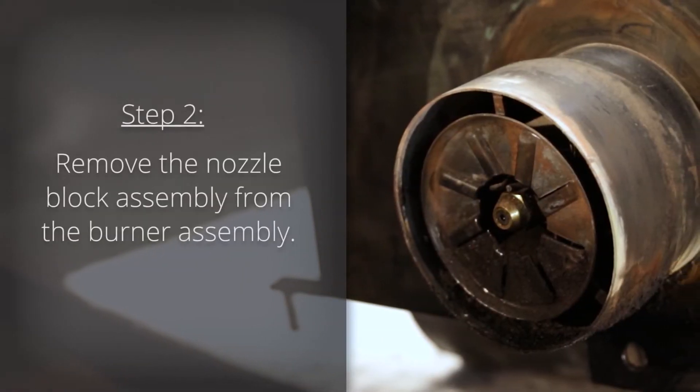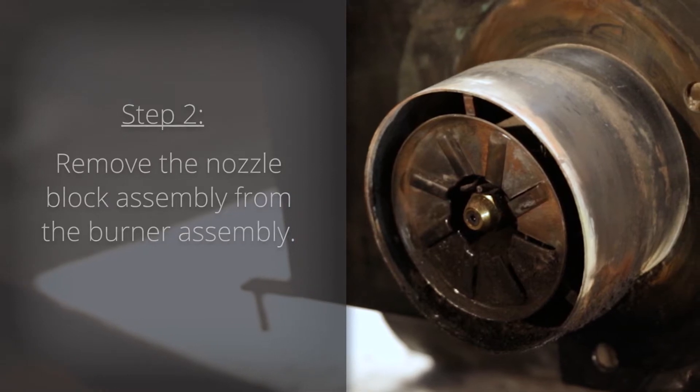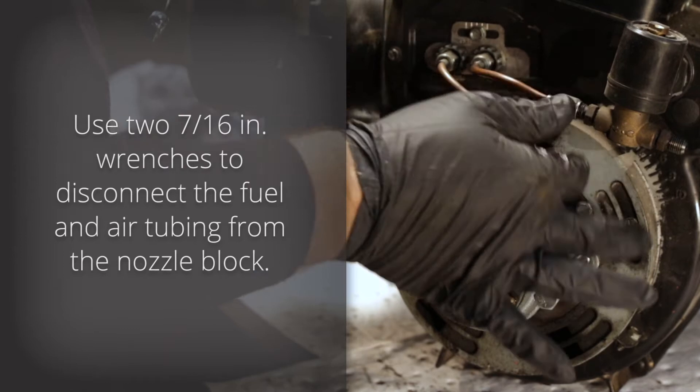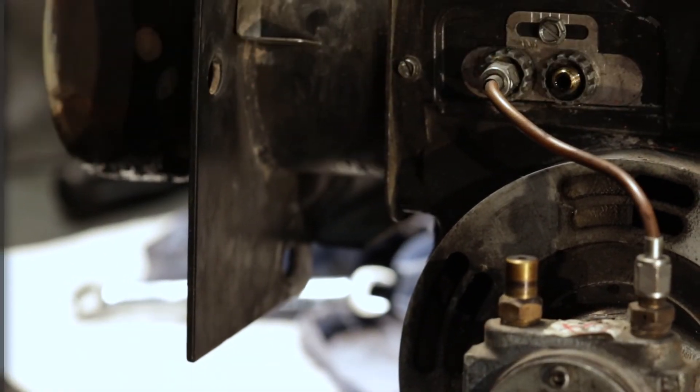Step 2. Remove the nozzle block assembly from the burner assembly. Use two 7-16th inch wrenches to disconnect the fuel and air tubing from the nozzle block. Once removed, clean and inspect the copper tubing. Replace as needed.